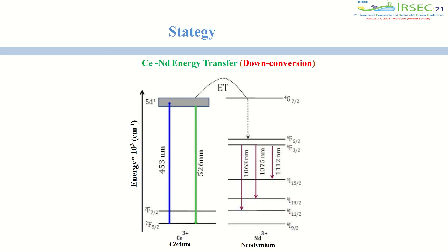Our work focuses on the case of the down-conversion process. Our method consists of the introduction of the rare earth couple — Cerium and Neodymium — into the Titanium Dioxide structure for photonic conversion. Excitation of the Cerium sensitizer ion via ultraviolet light, with energy transfer to the Neodymium activator ion, occurs and results in the emission of infrared light.